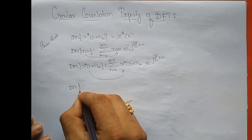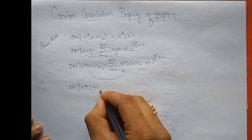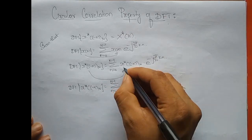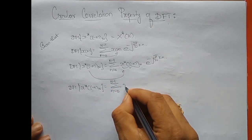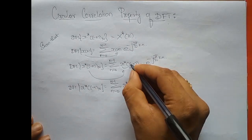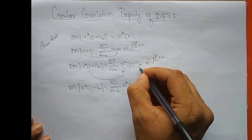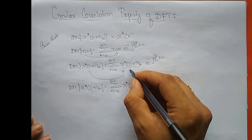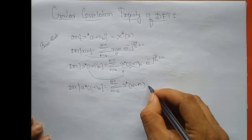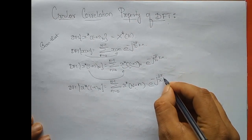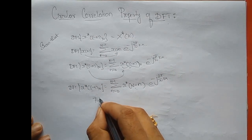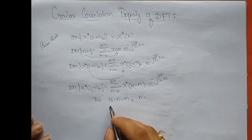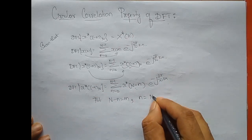So DFT of x star of minus n mod N is equal to summation n from 0 to N minus 1. I can write x star with minus n inside the bracket. Now I am going to substitute minus n equal to m, so n is equal to N minus m.